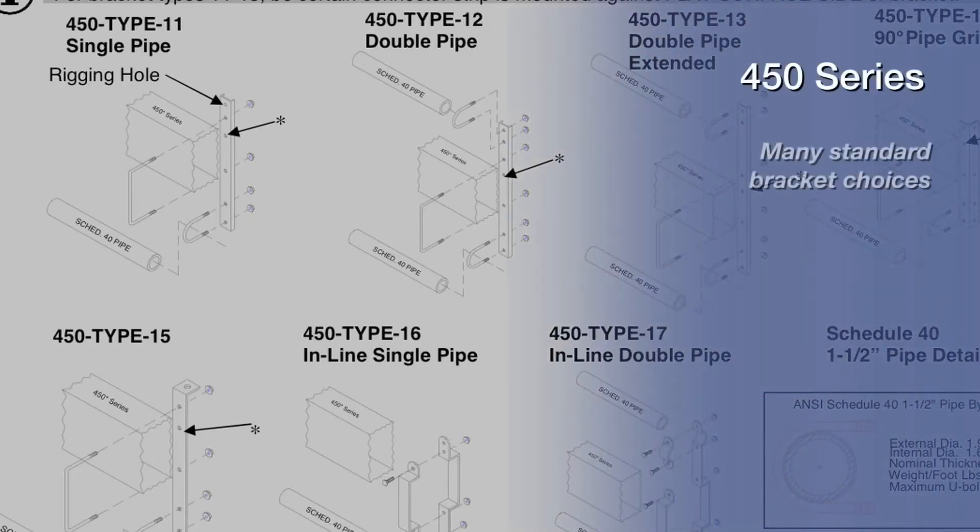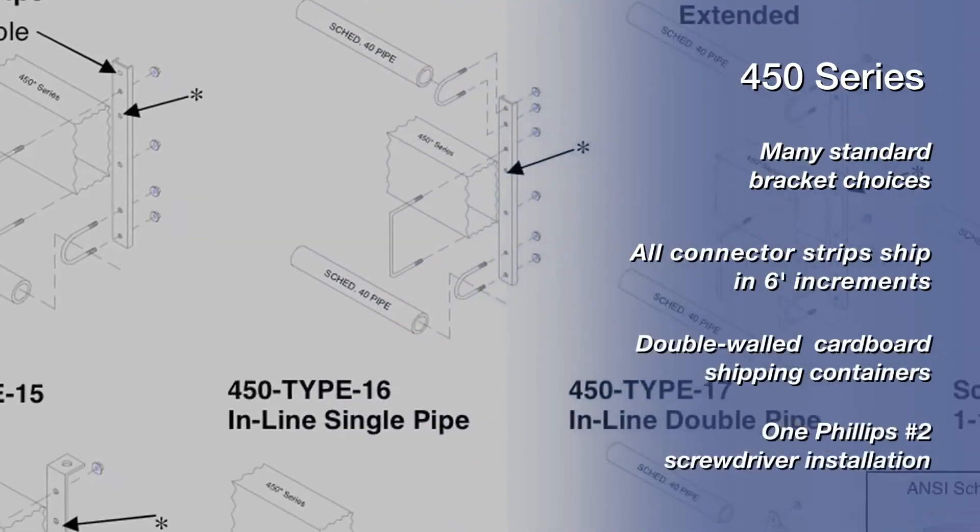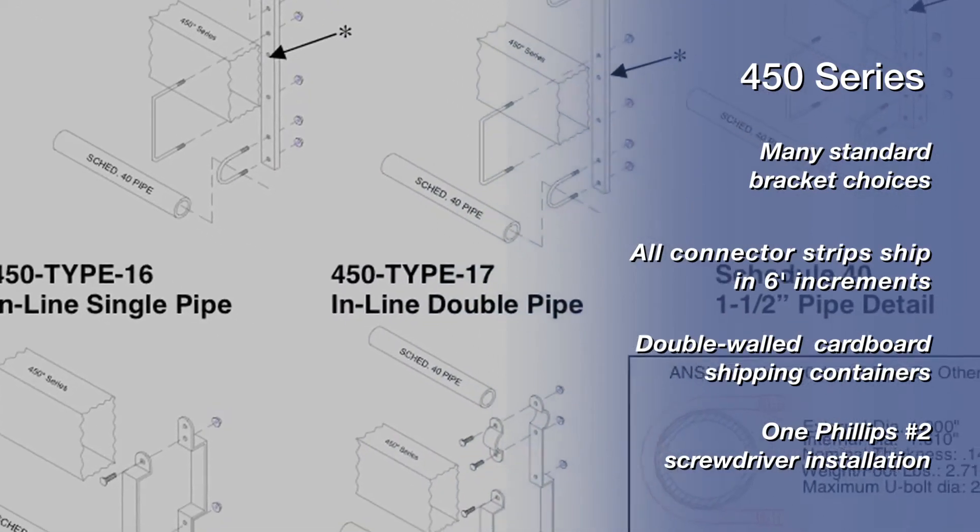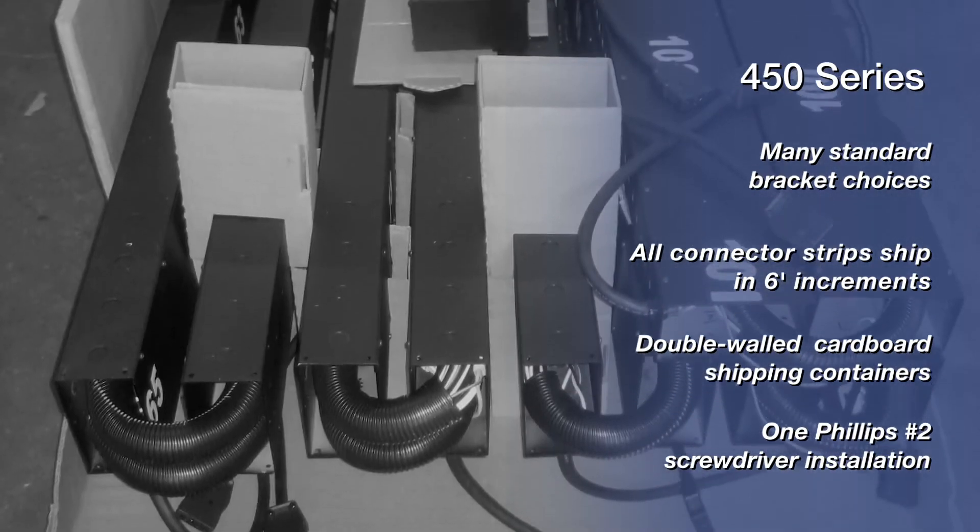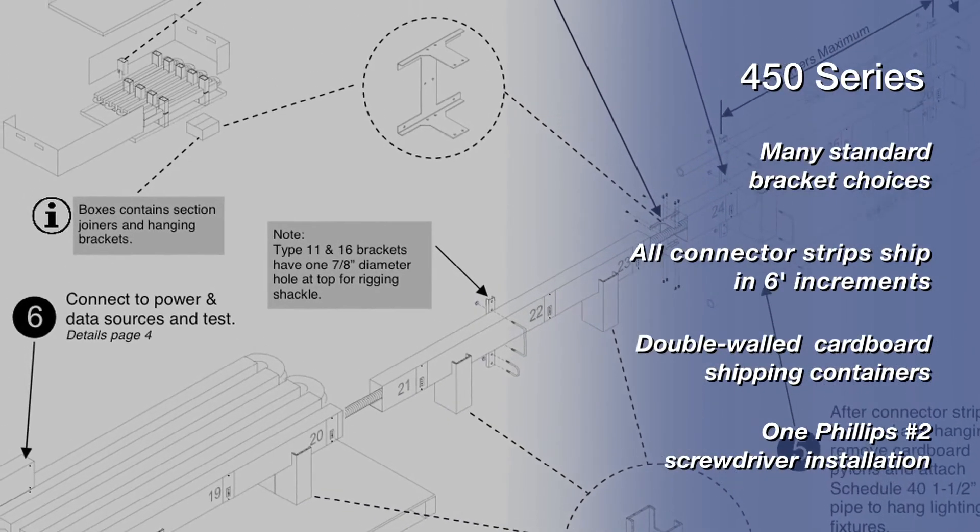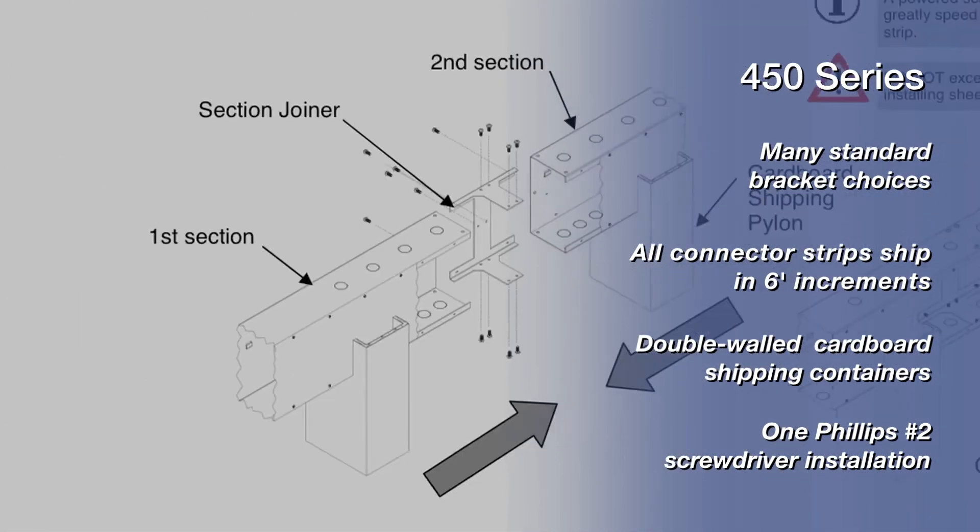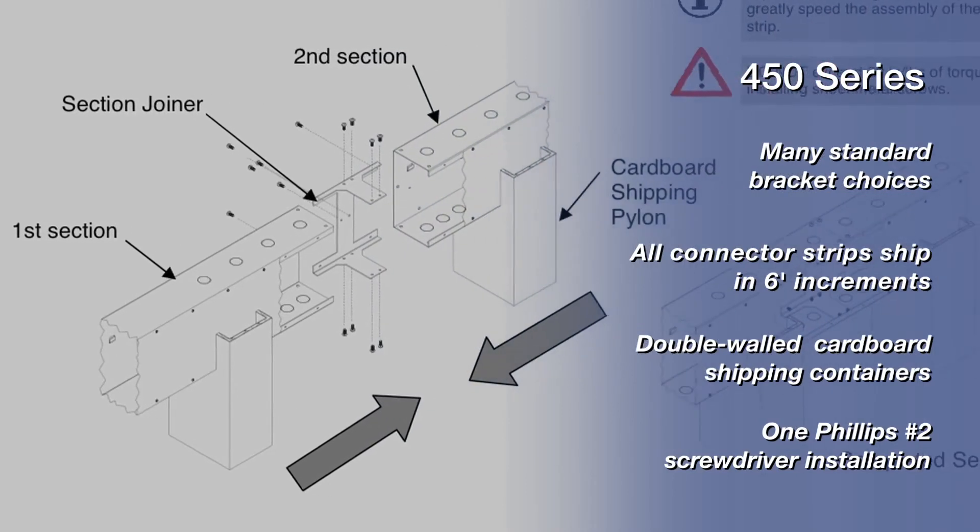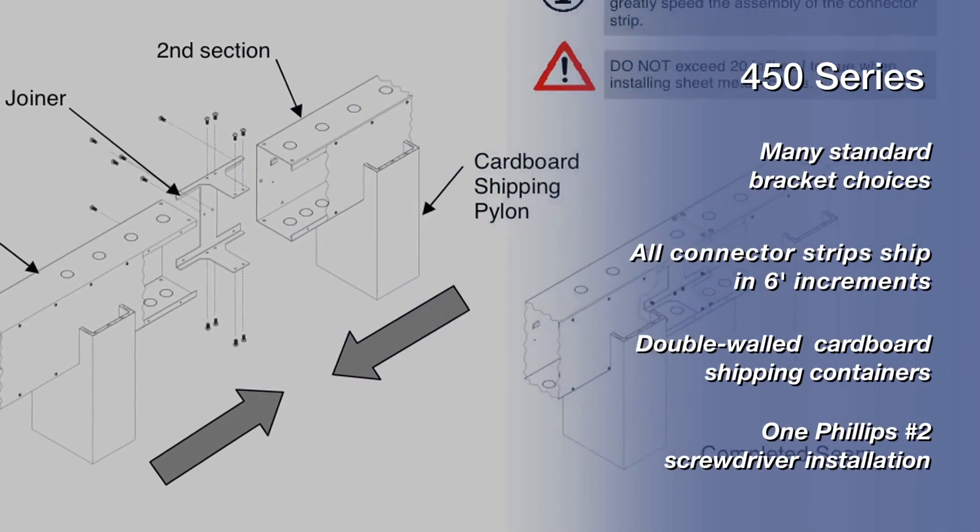Altman 450 series distribution has many bracket choices to meet any possible need. All connector strips ship in 6 foot increments in double walled corrugated cardboard shipping units and stanchions that allow easy installation and recycling of materials. All strips and plug boxes can be assembled with one number two Phillips screwdriver.